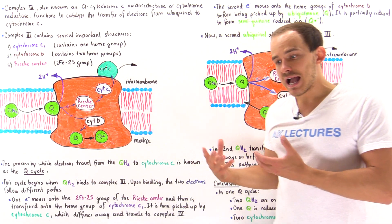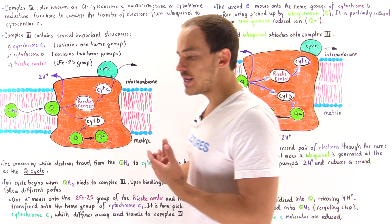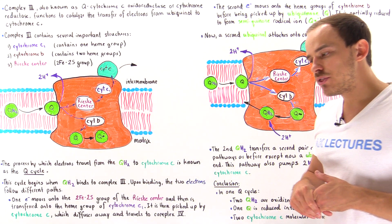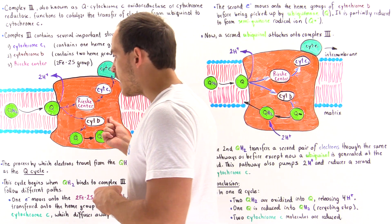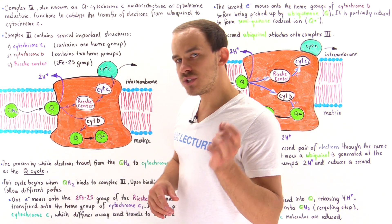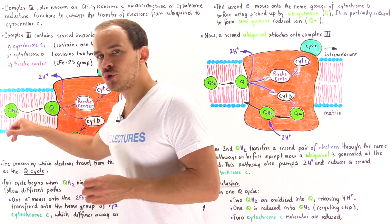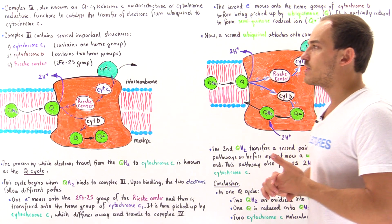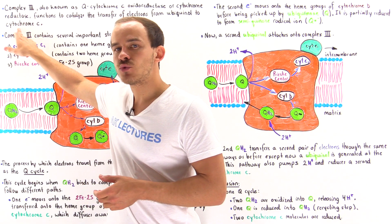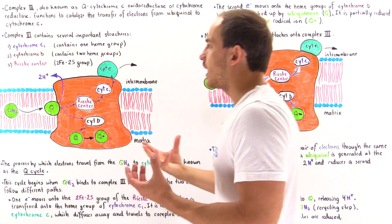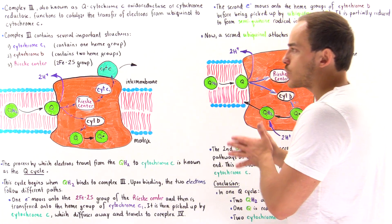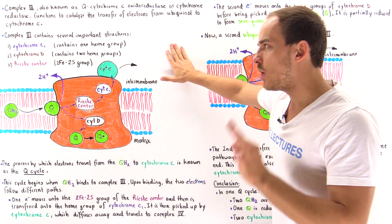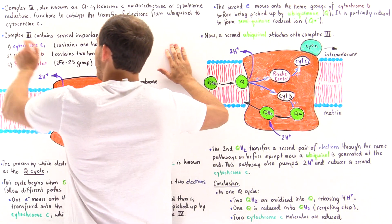Complex three actually consists of many polypeptide chains — in fact, 11 polypeptide chains make up complex three. The entire function and purpose of complex three is to transfer those high-energy electrons from QH2, from ubiquinol, onto another carrier molecule known as cytochrome C. In this lecture we're going to discuss the details of how this transfer takes place, focusing on the three major components found on complex three.